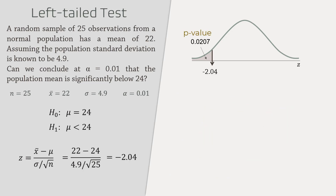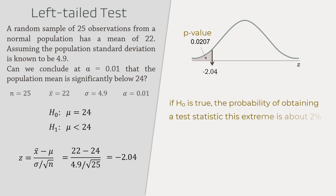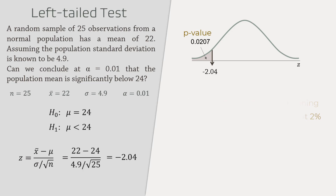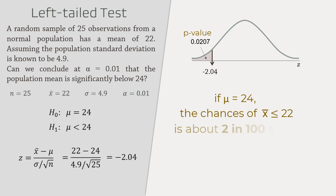But what does it mean? It tells us that if the null hypothesis is true, the probability of obtaining a test statistic this extreme is only about 2%. In other words, if the population mean is truly 24, the chances of obtaining a sample mean of 22 or less from that population is only about 2 in 100 samples of the same size — the size being 25 in this case.